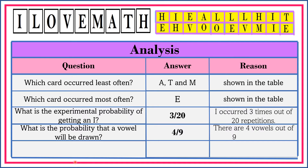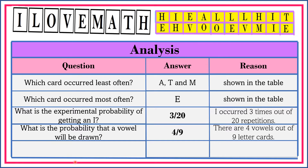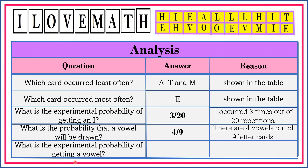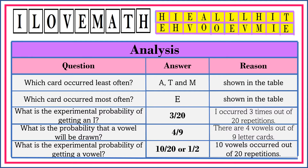There are 4 vowels out of 9 letter cards. What is the experimental probability of getting a vowel? If the question is experimental probability, let's refer our answer to the table. So we have 1, 2, 3, 4, 5, 6, 7, 8, 9, 10. The experimental probability of getting a vowel is 10 over 20 or 1 half. Remember to reduce your answer to its lowest term. 10 vowels occurred out of 20 repetitions.